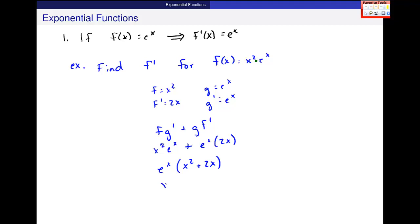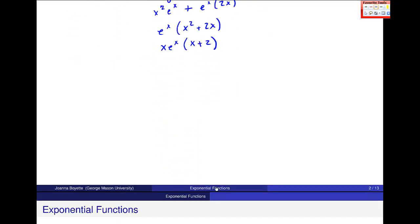I would factor out x e to the x and be left with x plus 2 if you're going to do something with this particular equation, like find where it's zero or things like that. Let's do one more example, kind of like this.